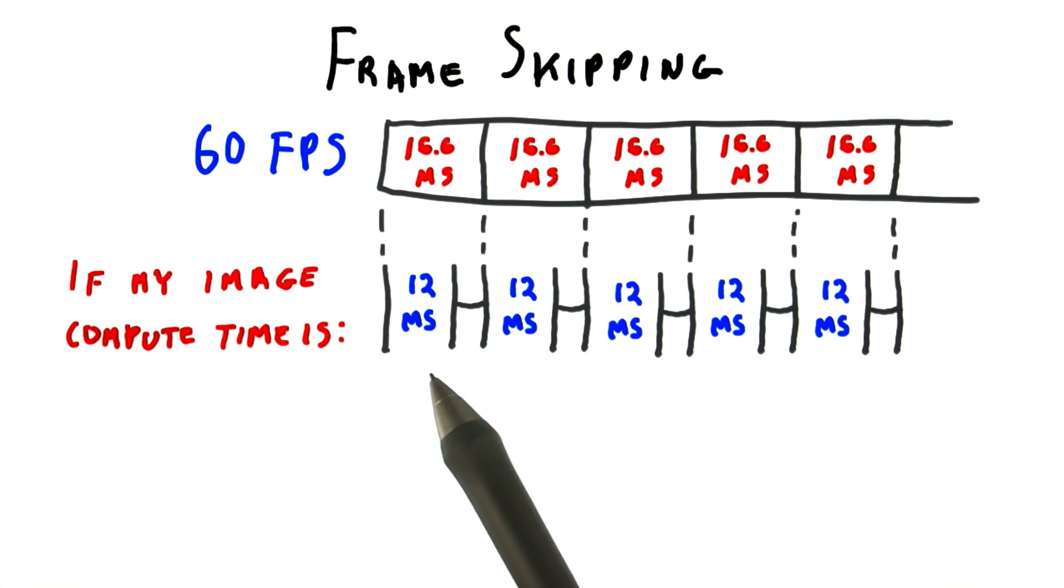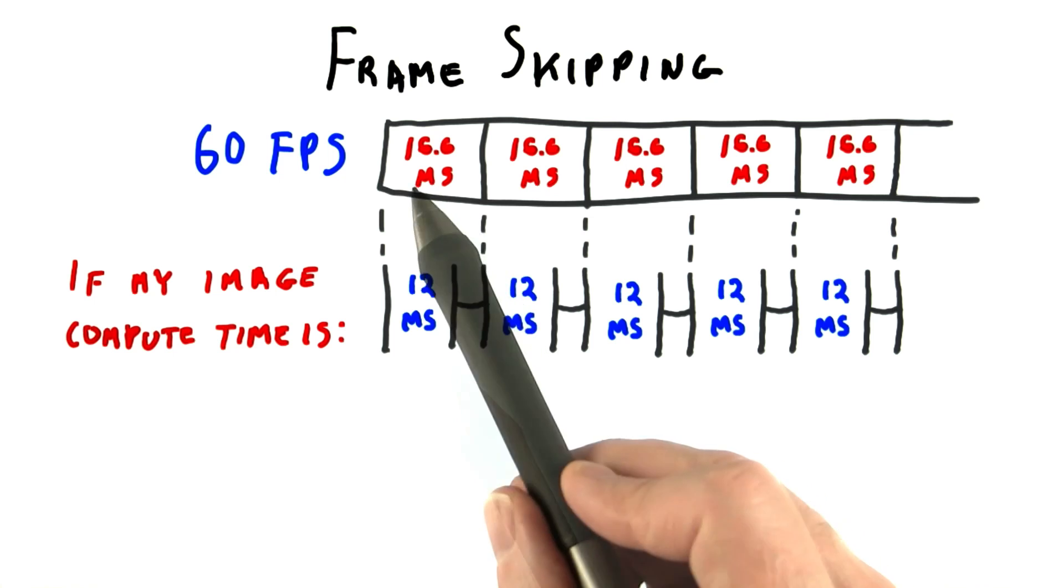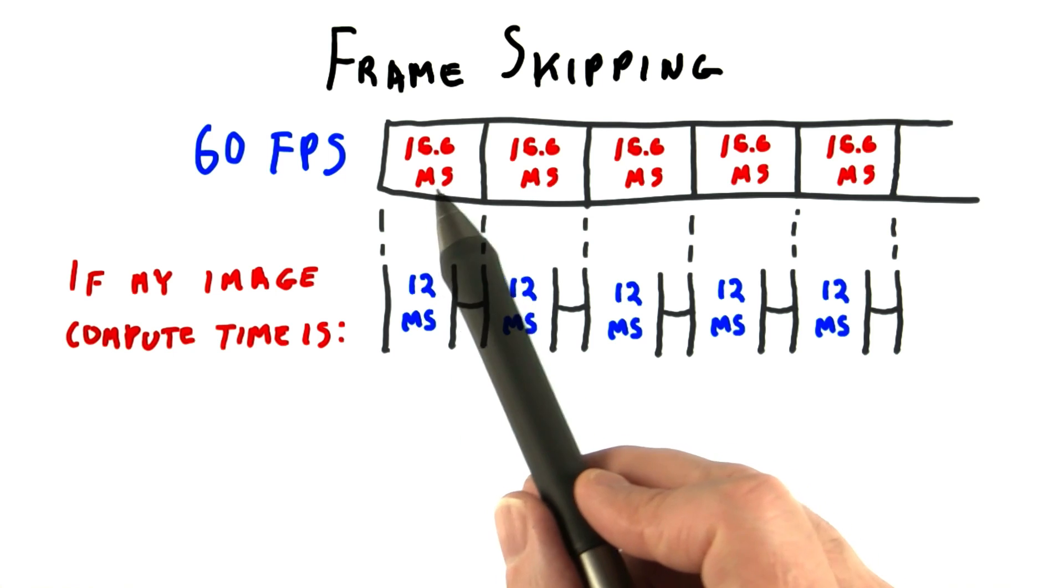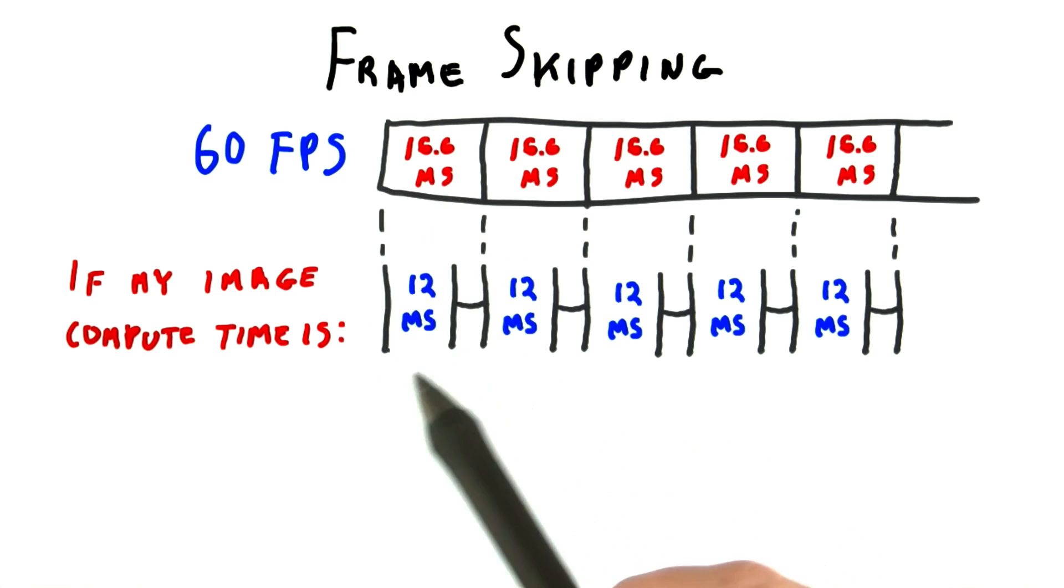For example, say an image takes 12 milliseconds to compute. This is well within the 16.6 milliseconds per frame, so each frame will display a new image.